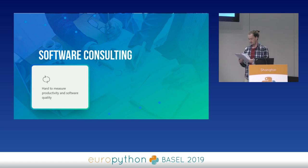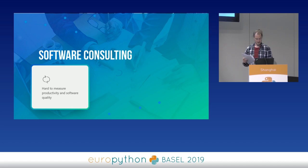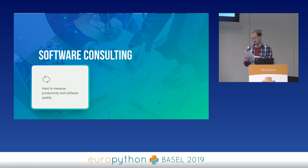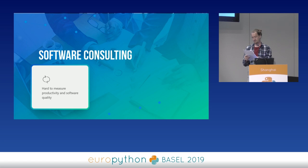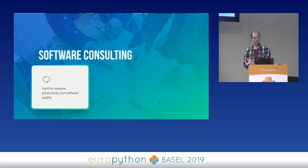A publication called 'Principal-Agent Theory and Its Application to Analyze Outsourcing of Software Development' addresses this directly. It states: 'The problem is especially glaring for the software business due to missing metrics and measures for programmer productivity and software quality. The missing concreteness of software makes it harder to control effort invested and results reached.' Software consulting definitely has the potential for information asymmetry and diverging interests.